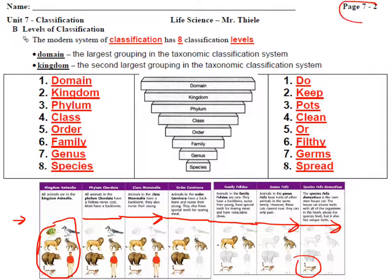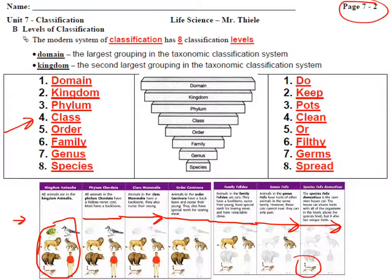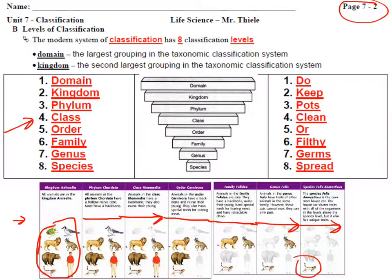We're back at page 772 briefly, because I want to remind you about what's in the beginning of your notes. We have our eight classification levels: domain, kingdom, phylum, class, order, family, genus, and species. Right now we're going to talk about the kingdoms — and actually the domains first, since that's the highest level we're addressing.